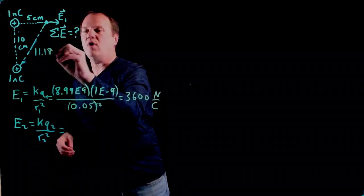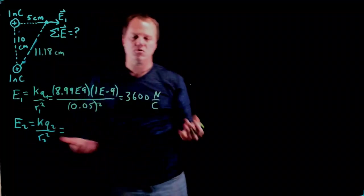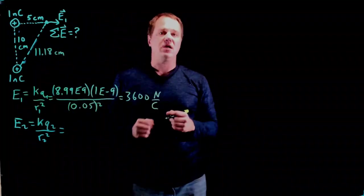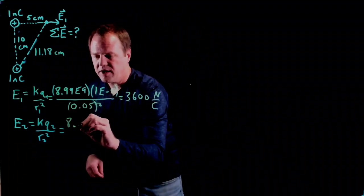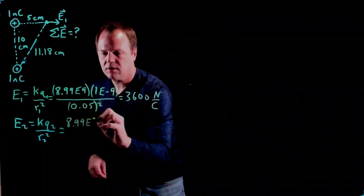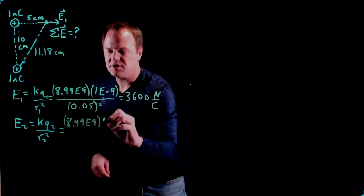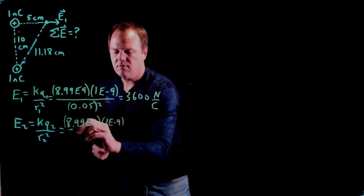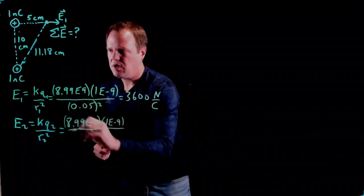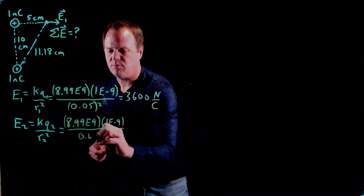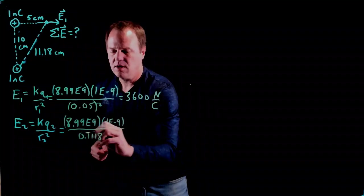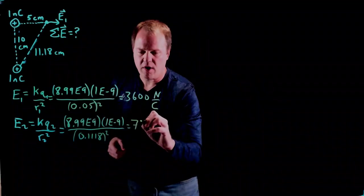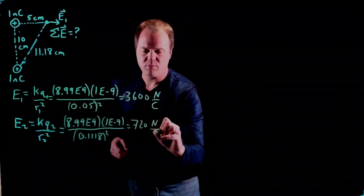It turns out that it's 11.18 centimeters if we take square root of the sum of the squares. So I know the distance, I know the charge, I can calculate the magnitude of the electric field. 8.99 times 10 to the 9th, just happens to be the same amount of charge, so 1 times 10 to the minus 9 for the q, and then the distance is converted to SI units, .1118 meters. And I throw that into my calculator, and it spits out 720 newtons per coulomb.